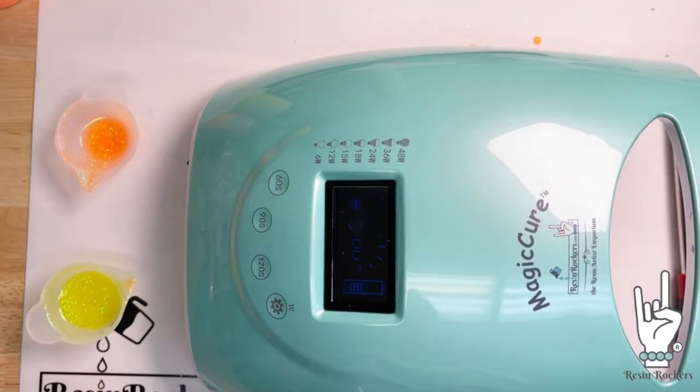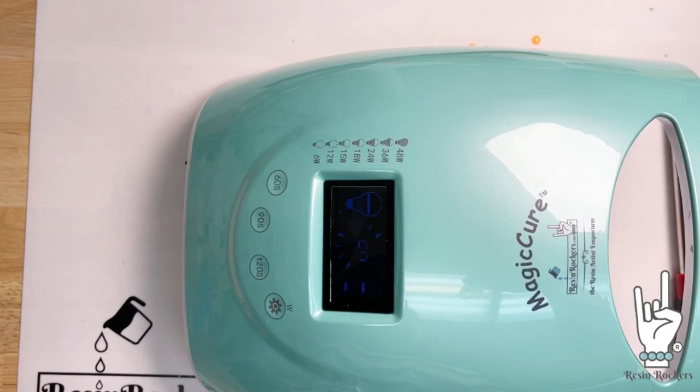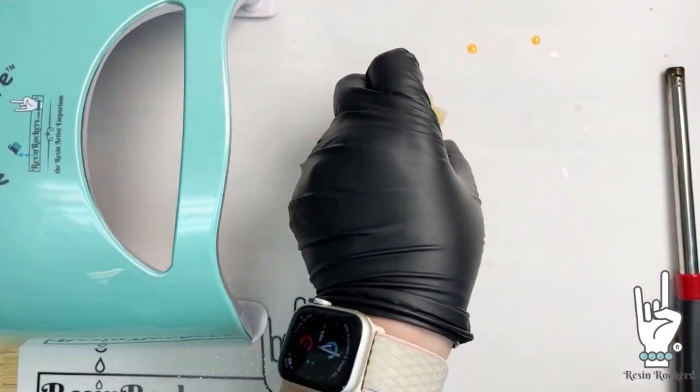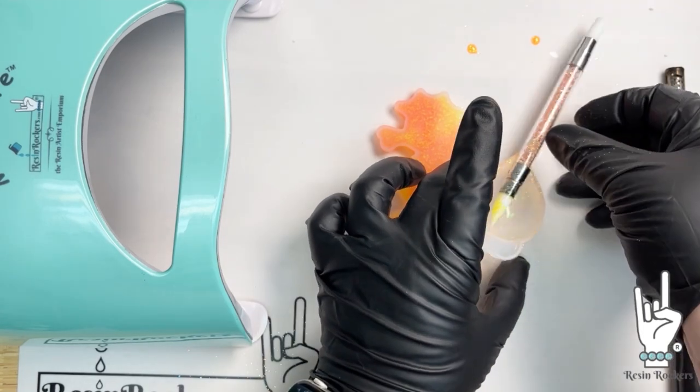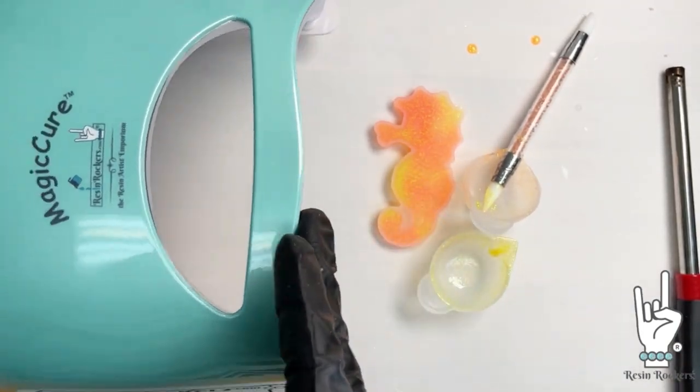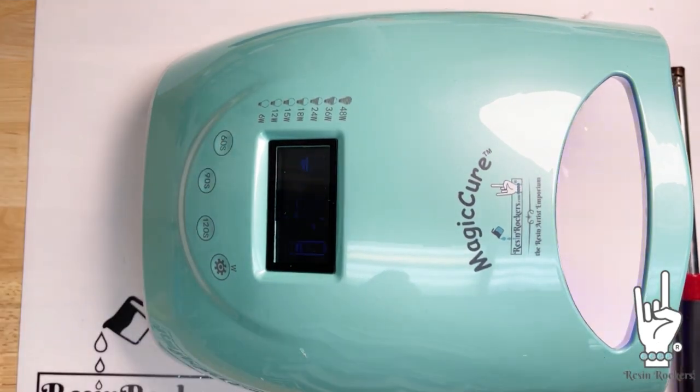We're going to cure this slower because the slower the cure, the better it's going to keep its shape. So start off at that six watts and every 10 seconds bump it up a little bit. Once you get through 60 seconds, turn that mold over. We're going to leave it on 24 watts and cure it for another 60 seconds. And that will give us a full cure.